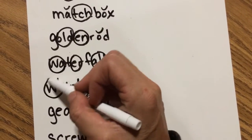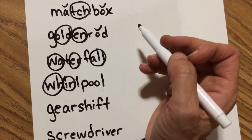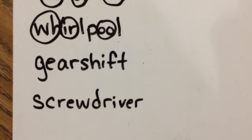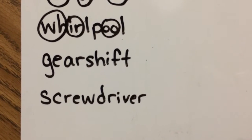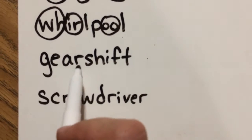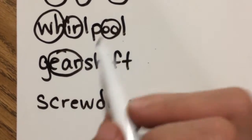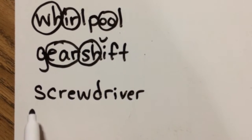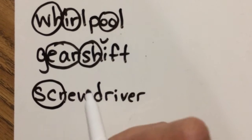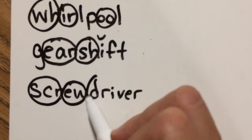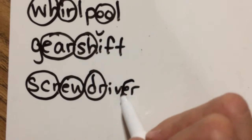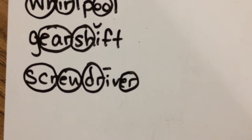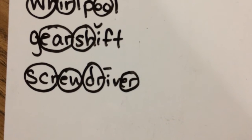Whirlpool — wha in whale, er in bird, and oo in tooth. How you doing? Let's check gearshift — do you see the ear in ear, the sh in ship, and a short I? And now let's check the last one: screwdriver. We've got skr in scream, oo in flu, dur in drum, and er — the er in verse. And that is a long I.